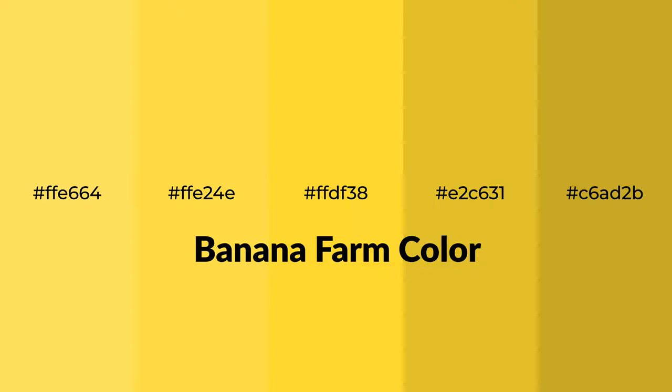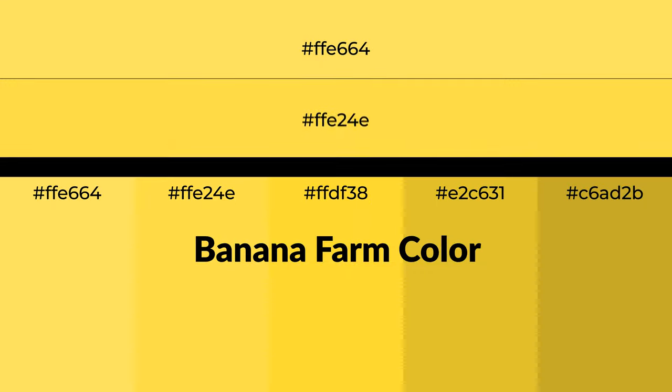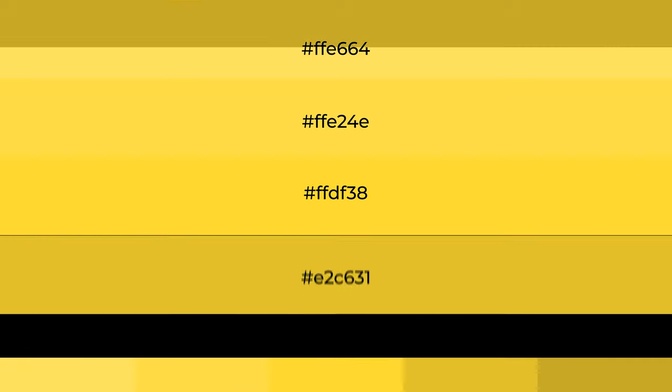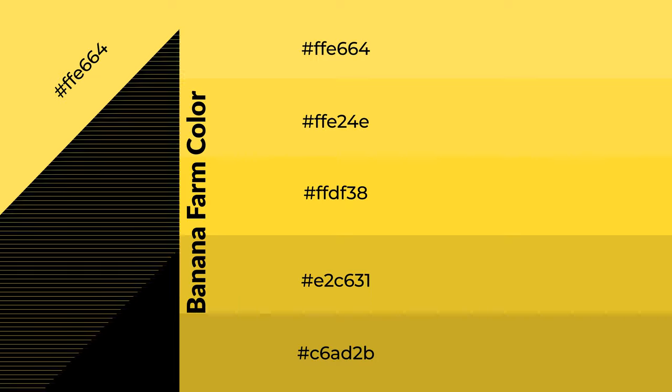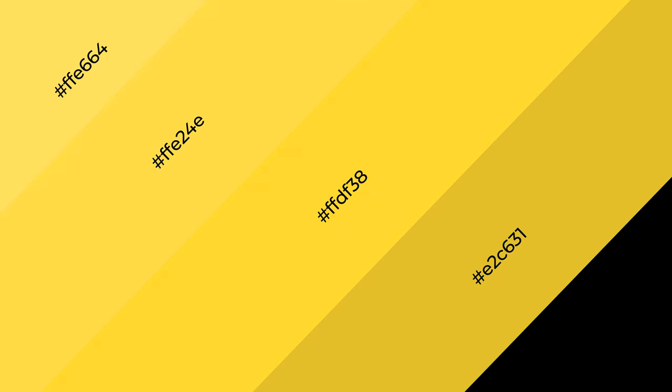Warm shades of banana farm color with green hue for your next project. To generate tints of a color, we add white to the color, and tints create light and exquisite emotions. To generate shades of a color, we add black to the color, and it is used in patterns, 3D effects, and layers. Shades create depth and drama.